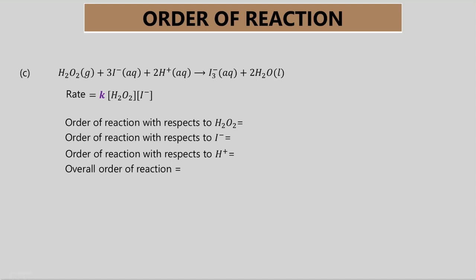Next, for question C, from the reaction equation we can see that there are 3 types of reactants used. But in the rate law there are only 2 reactants. So that means the other reactant, H+ ion, has a power of zero. Please remember, anything to the power of zero has a value of 1. So the order of reaction with respect to H2O2 is 1, with respect to I- is 1, and with respect to H+ is 0. So the overall order of reaction equals 2.